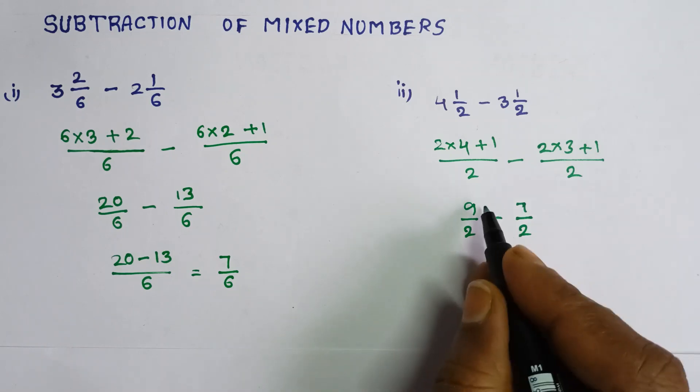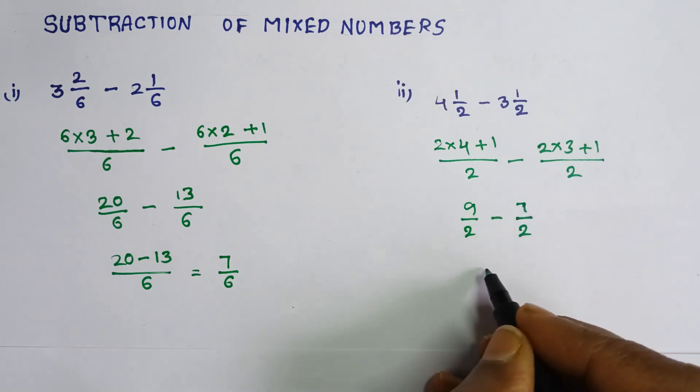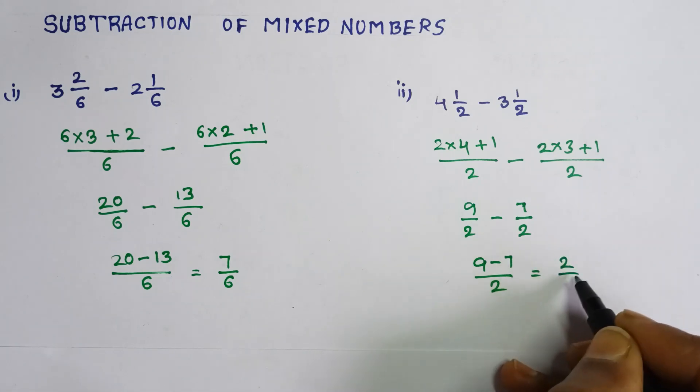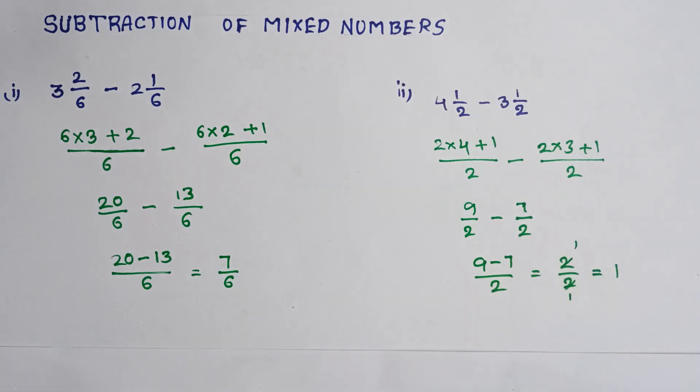We will get 9 minus 7 by 2, which is 2 by 2. 2 by 2 we can write it as 1 because 2 ones are 2. 1 by 1 we can write it as 1.